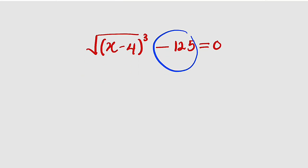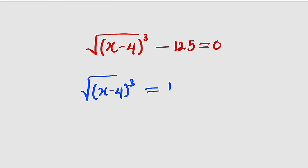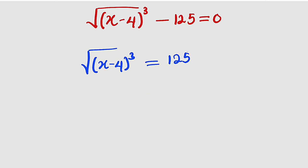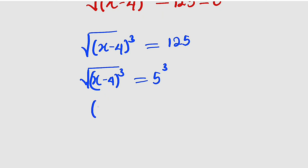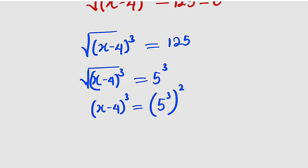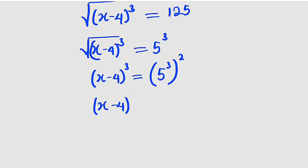First of all, I would like to take this term to the other side, leaving only the square root of x minus 4 to the power of 3, and this is equal to positive 125. Next, I know that 125 is the same thing as 5 to the power of 3. So we have the square root of x minus 4 to the power of 3 equals 5 to the power of 3. Next, I would like to clear this square root by squaring both sides. Once you square the left-hand side, you are left with x minus 4 raised to the power of 3, and this equals 5 to the power of 3 raised to the power of 2. We have just squared both sides. According to one of the laws of indices, you can always switch these powers, so we can rewrite it as x minus 4 raised to the power of 3 equal to 5 to the power of 2 raised to the power of 3.